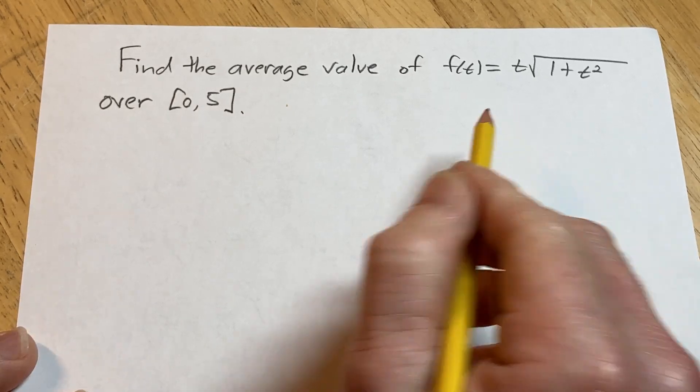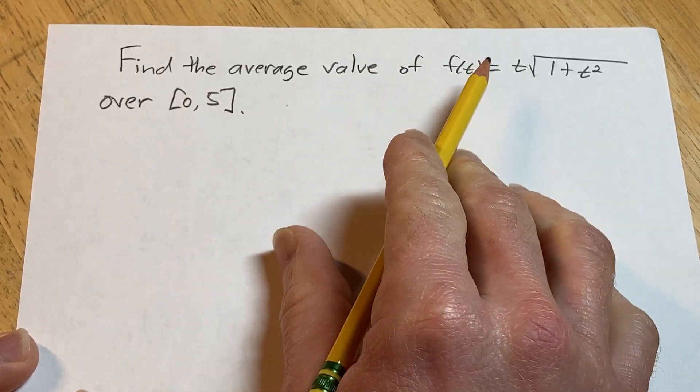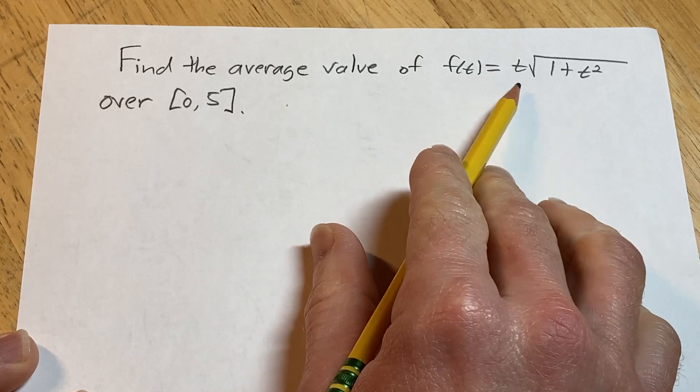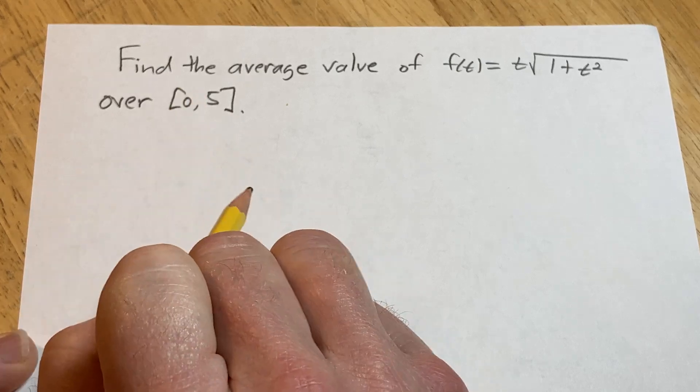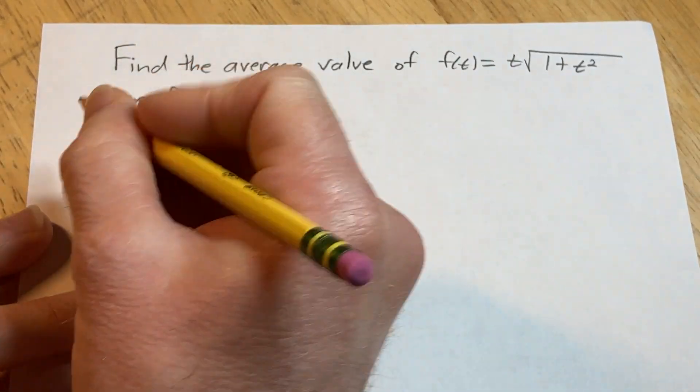Hello, in this video we're going to find the average value of the function f of t equals t times the square root of 1 plus t squared over the interval 0, 5. Let's go ahead and carefully work through it. Solution.